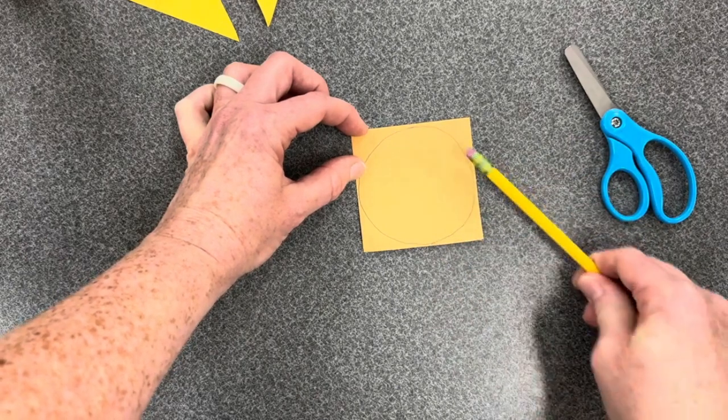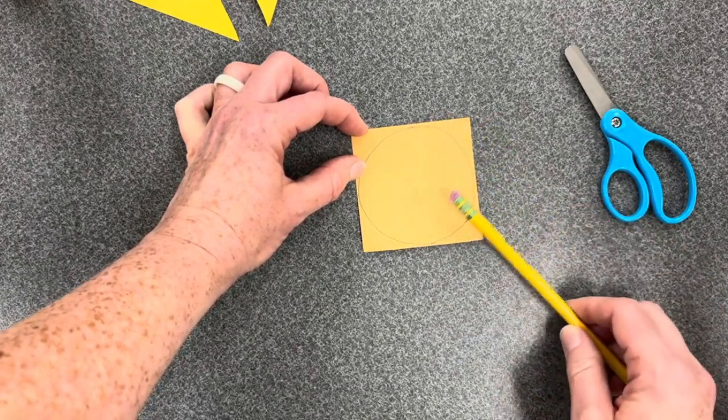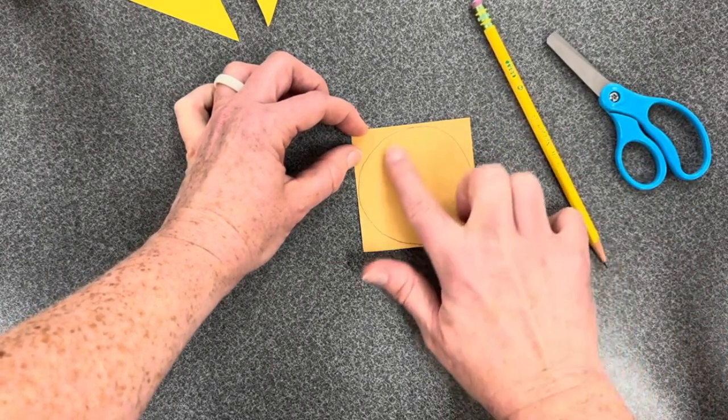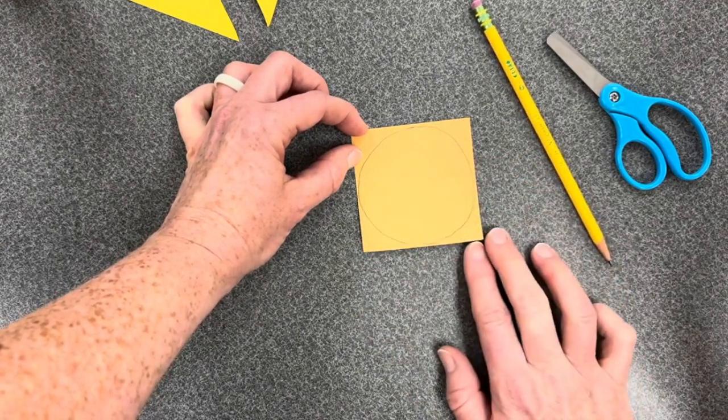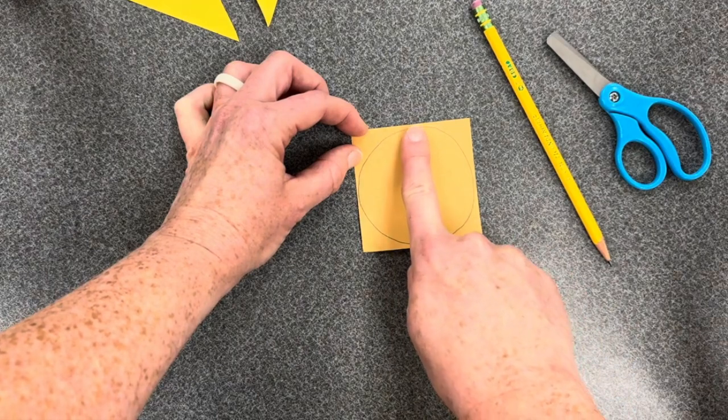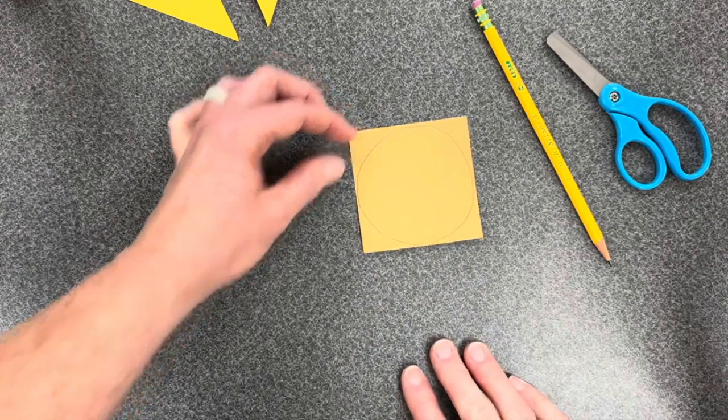If I need to, I can erase and redraw. Remember that Mrs. Cutterly has had lots and lots of practice drawing circles over the years. You might need to erase and try several times before you get a circle. You are looking to see that your circle touches all four sides of the square so that it's nice and big.